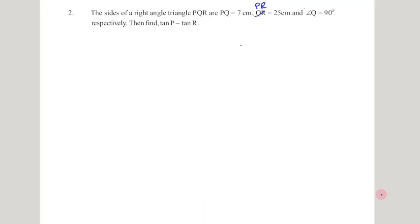Hi friends, welcome to JSM's Academy. Today we are going to discuss our second problem of exercise 11.2 — that is trigonometry. This is our first question: the sides of a right angle triangle are PQR, where PQ is 7 centimeters, PR is 25 centimeters, and angle Q is 90 degrees.